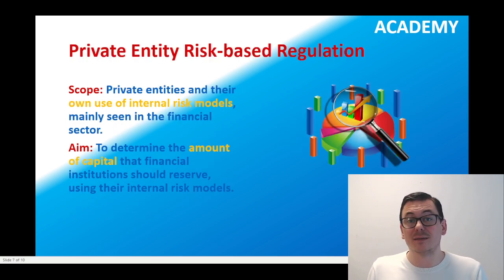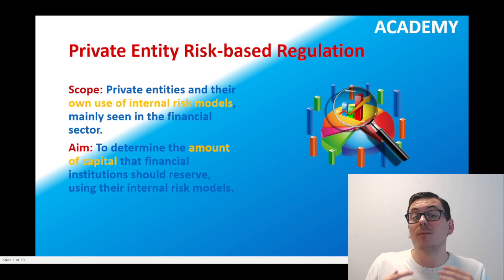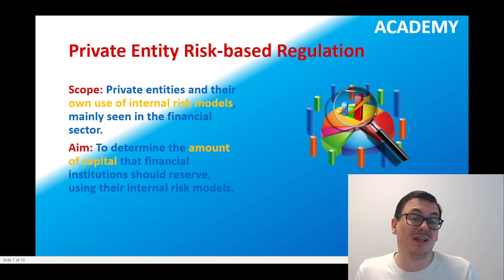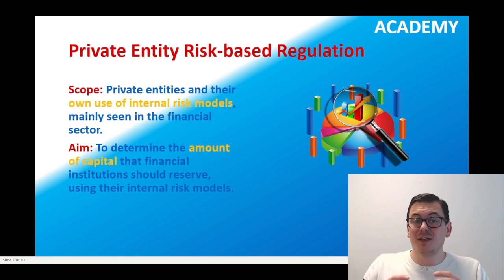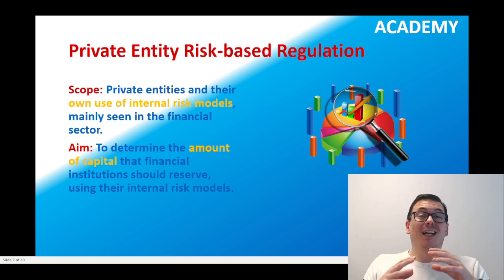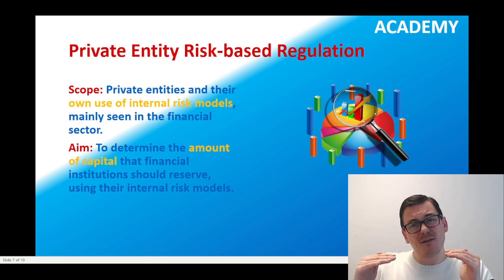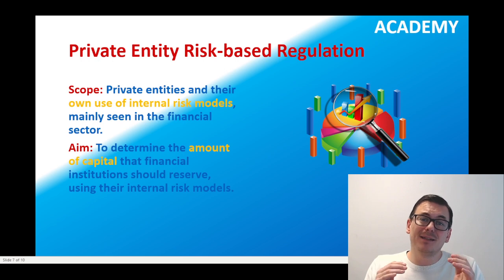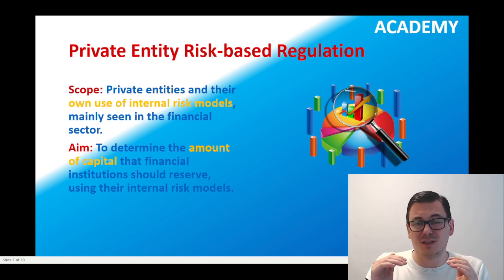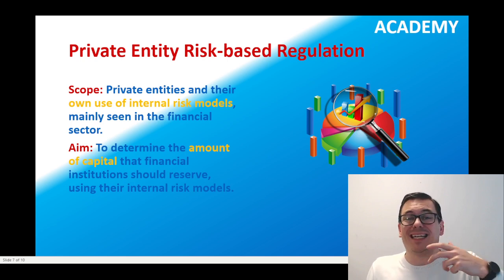Moving away from the public side toward the private side, we have private entity risk-based regulation. The scope here is private entities and their own use of internal risk models, mainly seen in the financial sector. The aim is to determine the amount of capital that a financial institution should reserve using internal risk models. Examples include regulatory requirements like Basel II, where a private entity must hold a certain amount of capital, and this amount depends on their own type of risk model and risk exposure. Typically this type of regulation will be monetary-based, measured in pure capital.